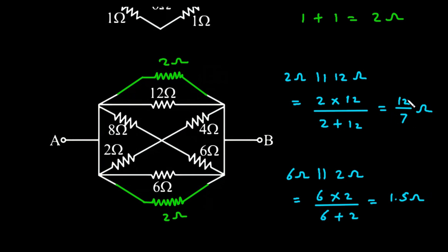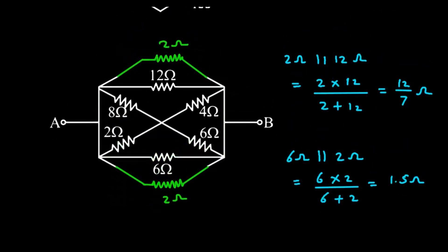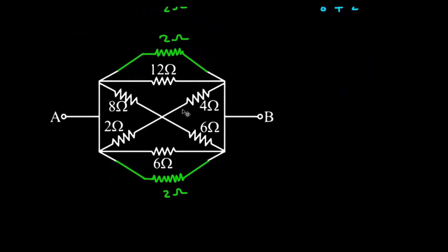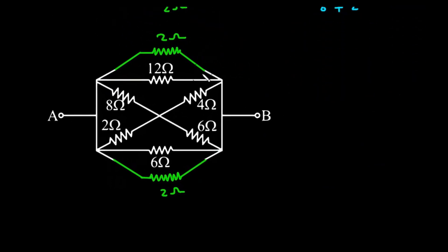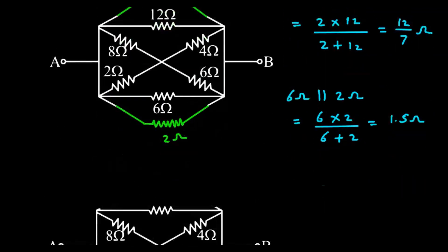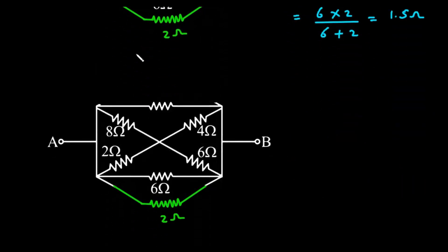Now, we can copy this circuit and replace these two resistances with a single resistance of 12 by 7 Ohm.